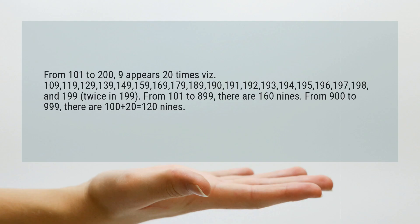From 101 to 200, 9 appears 20 times: 109, 119, 129, 139, 149, 159, 169, 179, 189, 190, 191, 192, 193, 194, 195, 196, 197, 198, and 199 — with 9 appearing twice in 199.